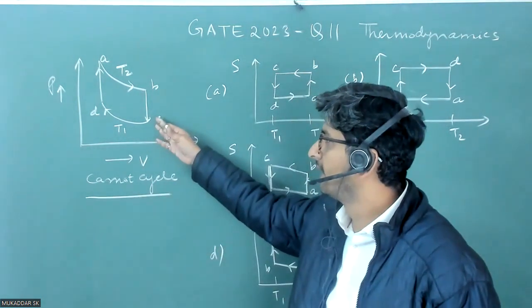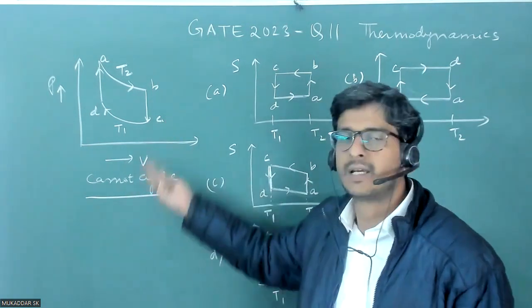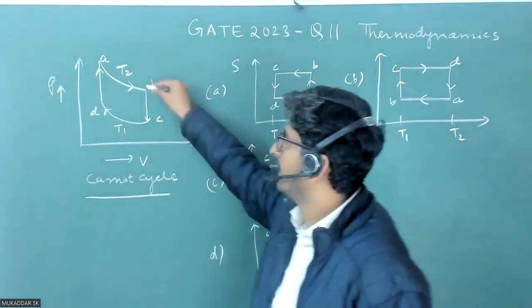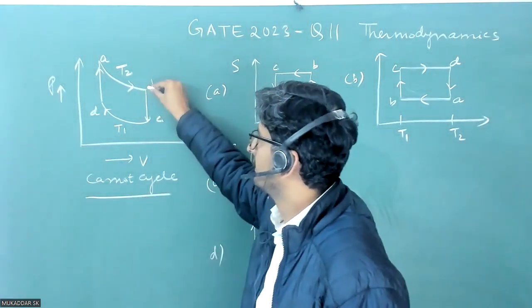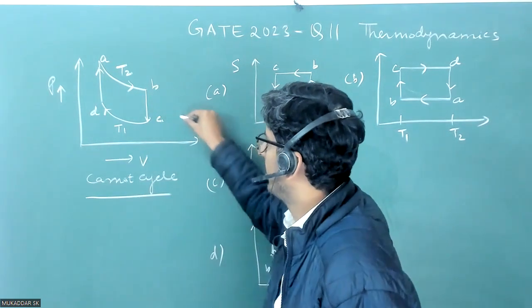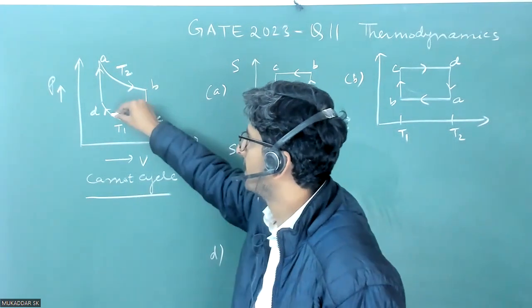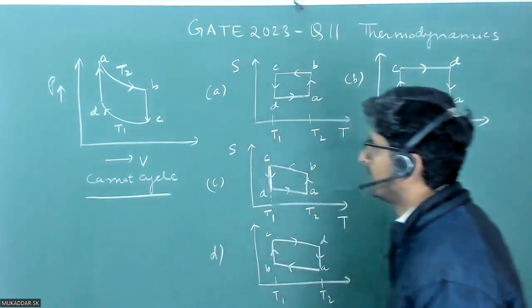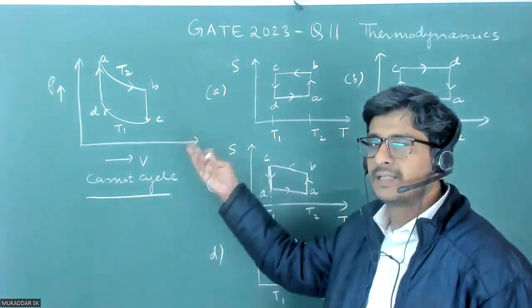Because Carnot cycle is like that, this is at higher temperature and it is isothermal expansion, adiabatic expansion, then isothermal compression and adiabatic compression.